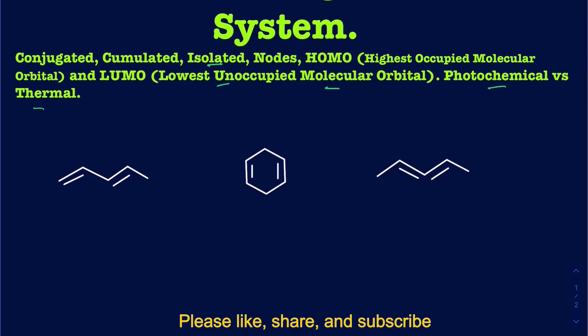We have isolated dienes where you have two double bonds. When talking about conjugated and isolated systems, you could have more than two pi bonds, but here I'm just looking at dienes. In the first example, I see a first pi bond and a second one separated by only one sigma bond — another way of saying those two are conjugated with one another. So this first one is a conjugated diene.